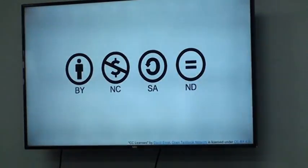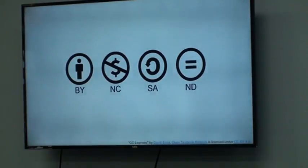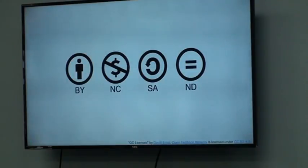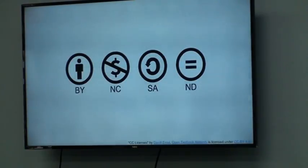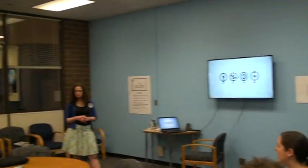Participants explain the Creative Commons symbols: the first means you must note who the content is by (attribution); the second means non-commercial - you can't sell it for profit, though selling at cost may be okay, and a bookstore's regular markup is acceptable since it's not-for-profit; the third means ShareAlike - whatever you make from someone's content, you must share it with the same level of licensing.